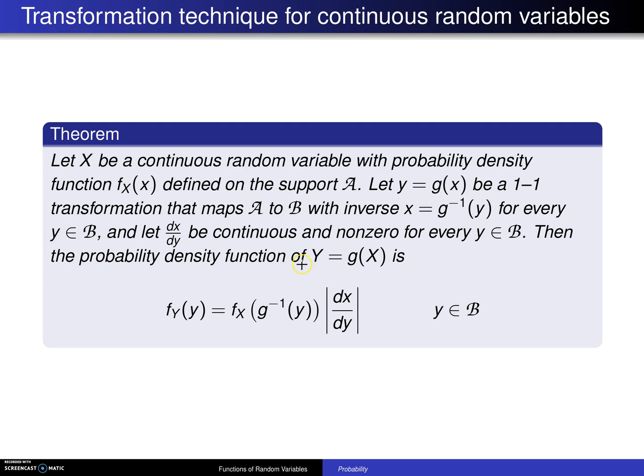Then the probability density function of Y = g(X) is f_Y(y) = f_X(g^(-1)(y)) times the absolute value of dx/dy for y element of B.